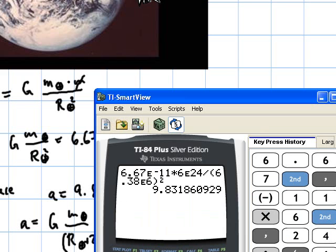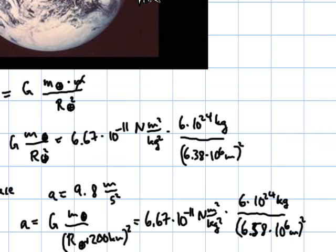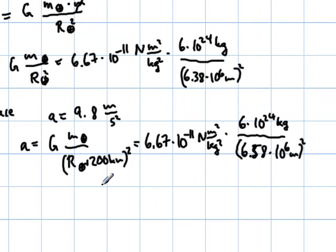And I could type this in all over again, but here I have the comfort of just hitting second entry. And some scientific calculators do that too. You can just go back to the last equation. And here all I have to do is put a 5.8. There, 6.58. And there we go, 9.2 meters per second squared. So, a equals 9.2 meters per second squared.